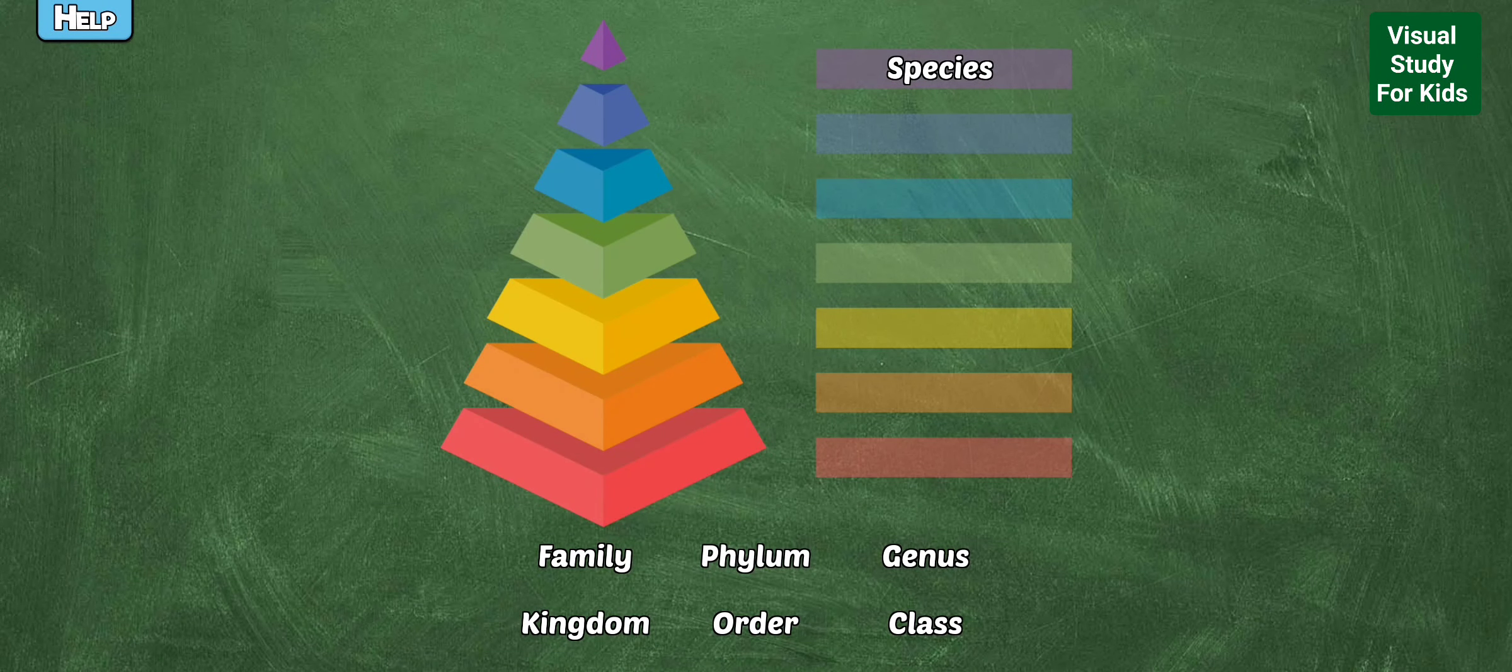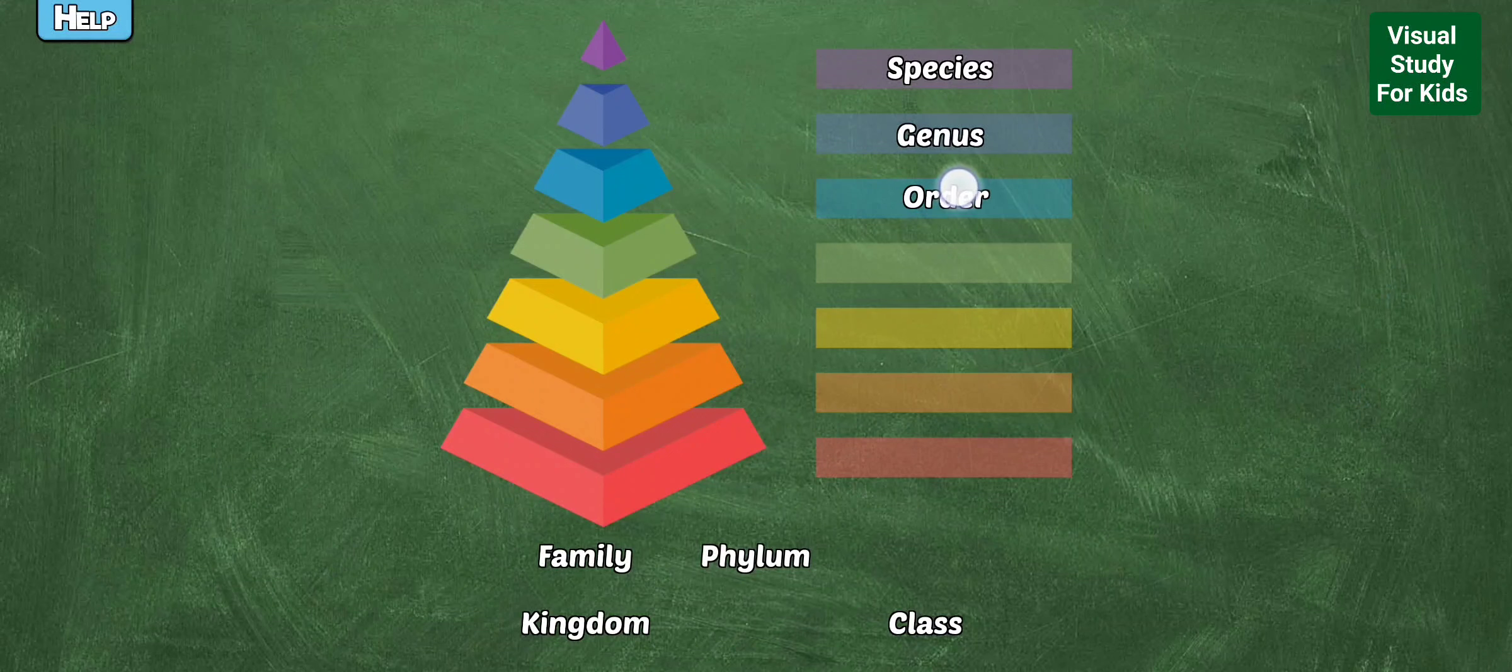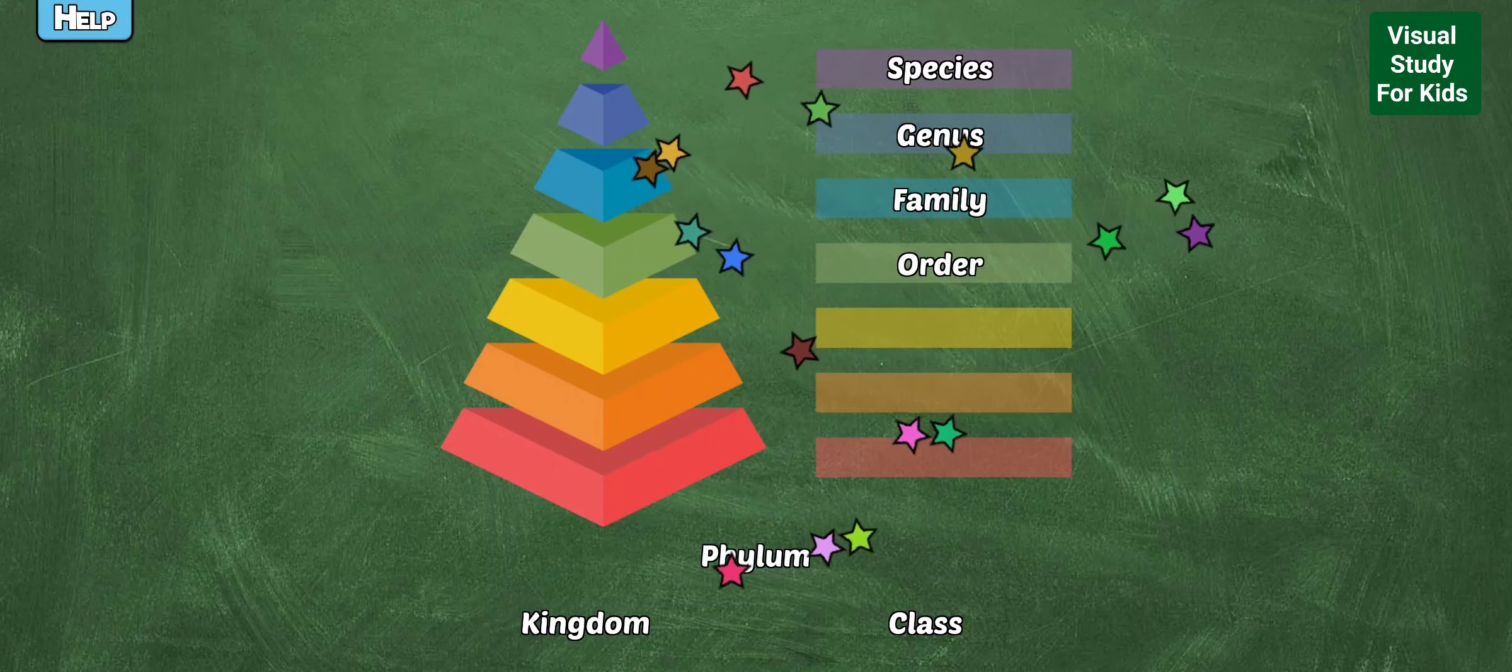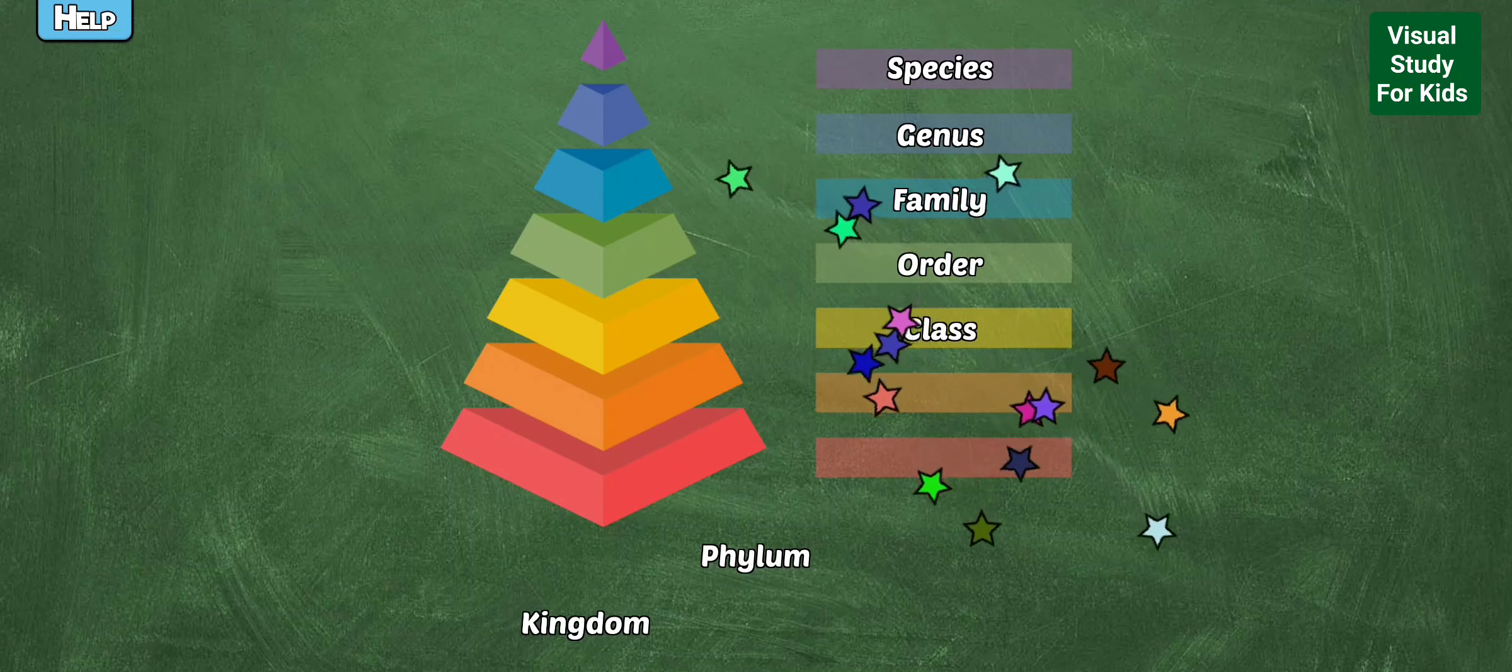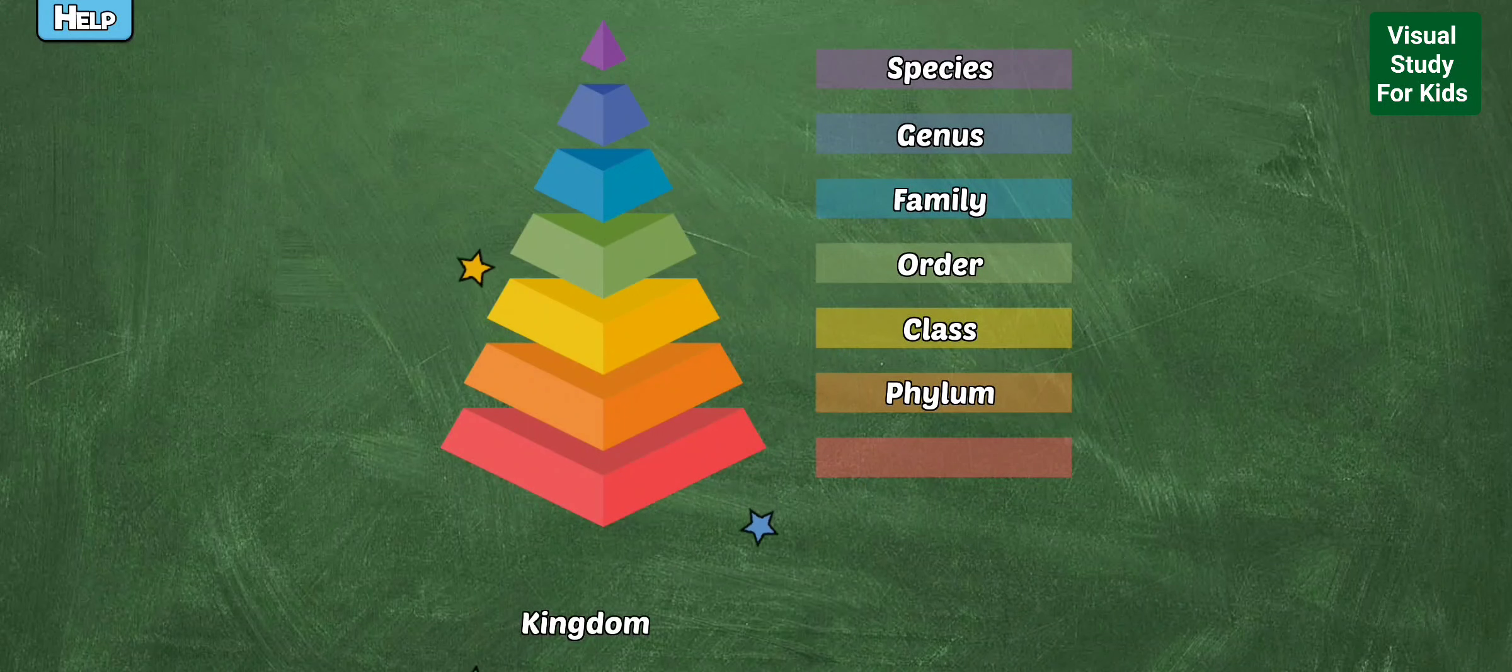Put the classifications in order from most specific to most broad: Genus, Order, Family, Class, Phylum, Kingdom. Nice.